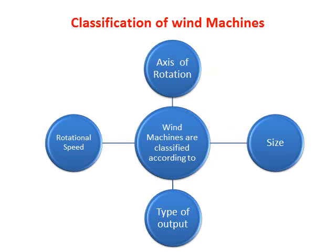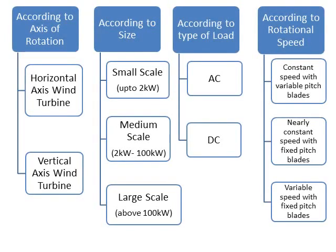Generally wind machines are classified according to axis of rotation, their size, type of output, and rotational speed. According to axis of rotation, wind machines are classified into two types: horizontal axis wind turbine and vertical axis wind turbine.